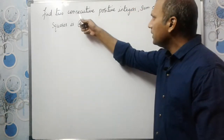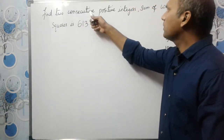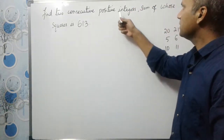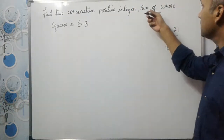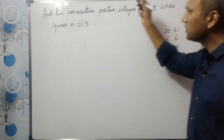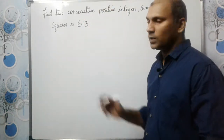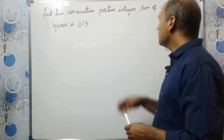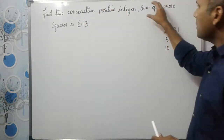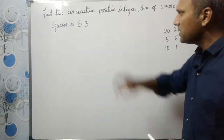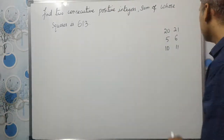We need to find two consecutive positive integers, the sum of whose squares is 613.